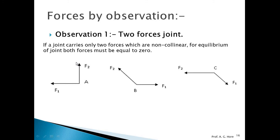Joints A, B, and C carry only two non-collinear forces each. To satisfy equilibrium, since the forces cannot be collinear, both forces must be equal to zero. This is the first observation — we can directly write that the two forces at such a joint are zero.